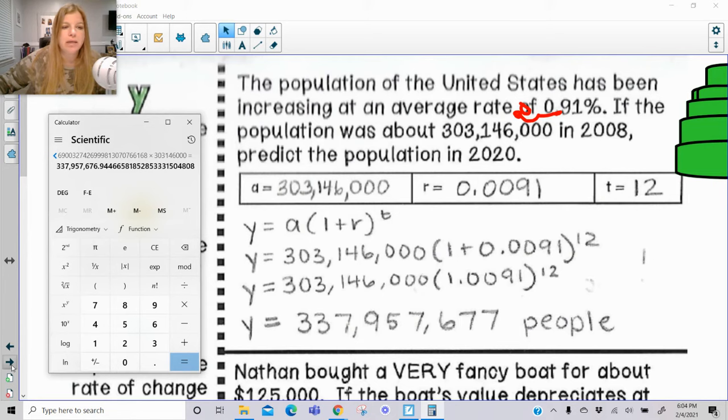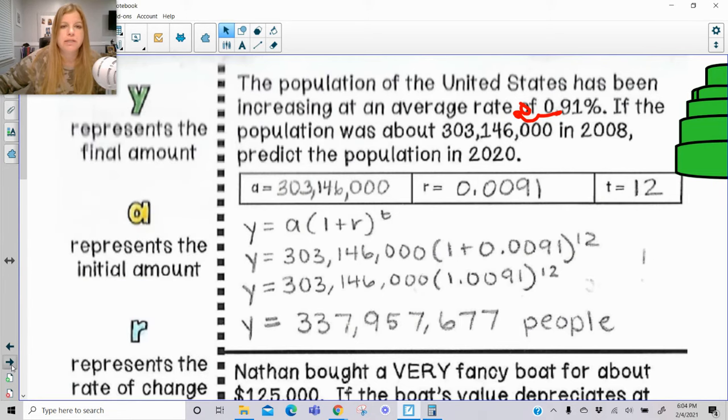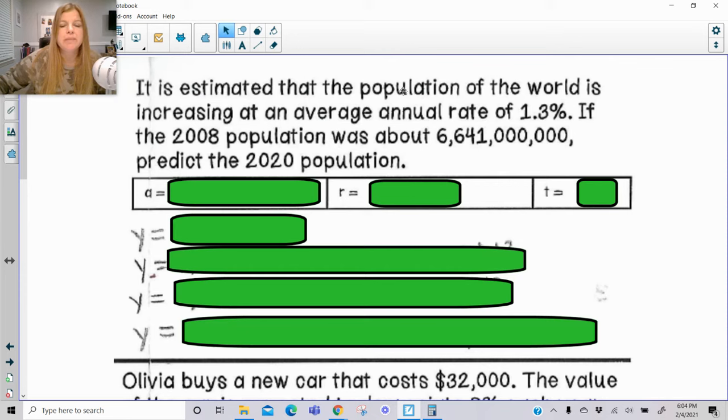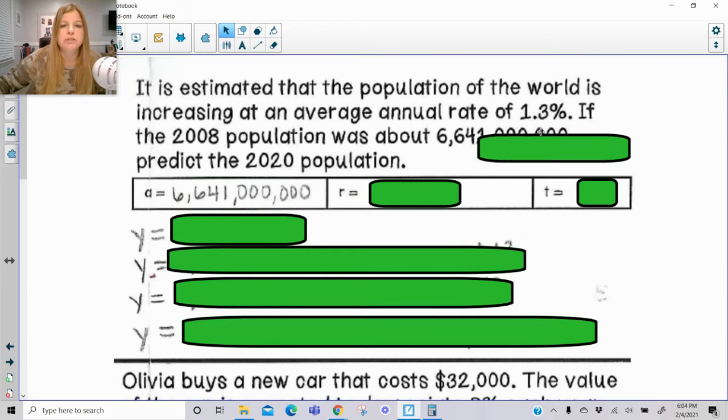All right, let's take a look at the next screen. So it is estimated that the population of the world is increasing at an average rate of 1.3%. If the 2008 population was about 6,641,000,000, predict the 2020 population. So my initial amount, my rate.